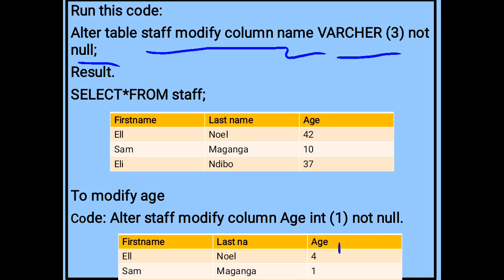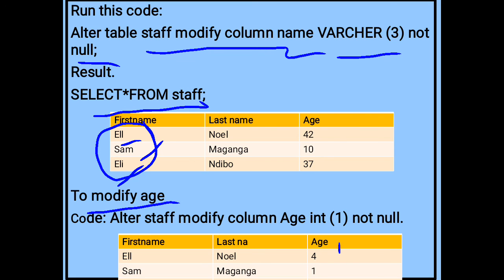The code ALTER TABLE staff MODIFY COLUMN name VARCHAR(20) NOT NULL is used to modify the column character length. Run the command to see the result directly from the staff table — you can see the first name changed to a new character size. To modify age, you can use the command: ALTER TABLE staff MODIFY COLUMN age INT(1) NOT NULL. Then run the command and the integer for age is modified from two digits to one.